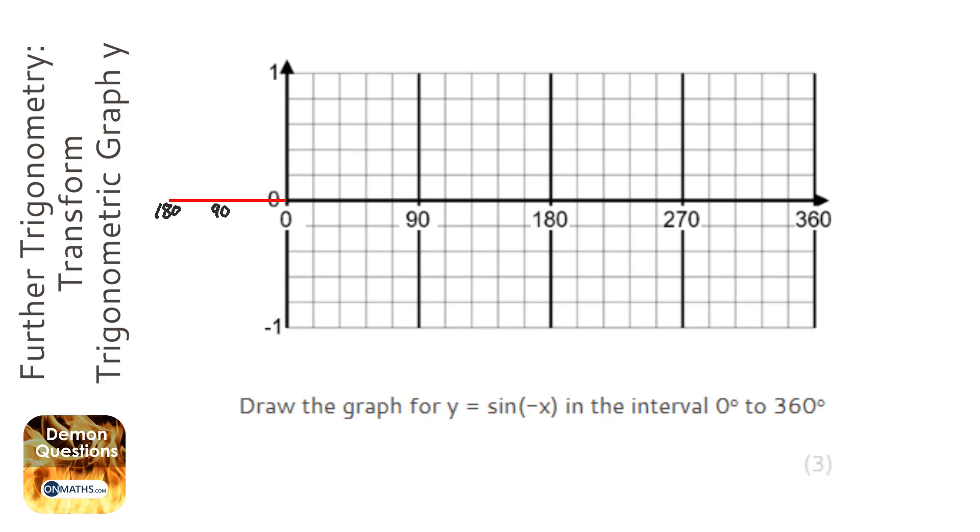It's going to be a bit squished because I've not got much room on that side. So sine starts at 0 and goes up, so behind the scenes it's going to go down to minus 1 there and then back up to 0 at 180, and that's a really dodgy graph because it should be a lot more curved than that.